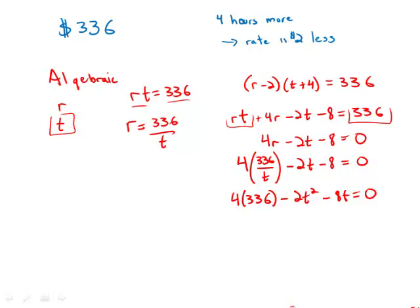So now I have a quadratic. First of all, I'm going to multiply everything by a negative and write the terms in order, so I get 2t squared plus 8t minus 4 times 336 equals 0. I'm also going to divide by 2 to make things simpler: t squared plus 4t minus 2 times 336—so that happens to be 672—equals 0.